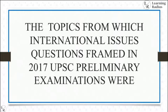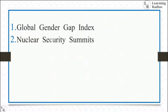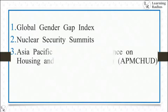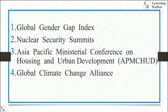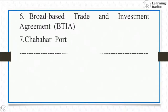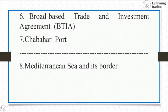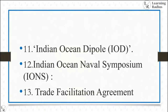The topics from which international issues questions were framed in 2017 UPSC preliminary examinations were: Global Gender Gap Index, Nuclear Security Summits, Asia-Pacific Ministerial Conference on Housing and Urban Development, Global Climate Change Alliance, UN Habitat, Broad-Based Trade and Investment Agreement, Global Infrastructure Agreement, Chabahar Port, Mediterranean Sea and its borders, Global Infrastructure Facility, Climate and Clean Air Coalition, Indian Ocean Dipole, and Indian Ocean Naval Symposium.